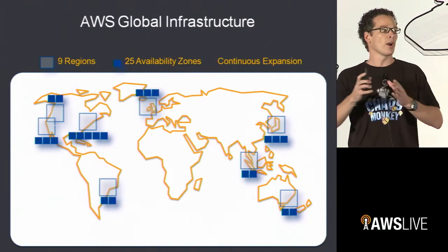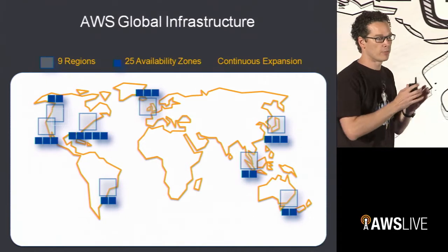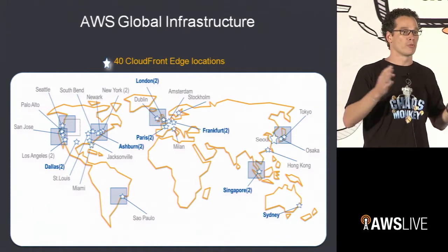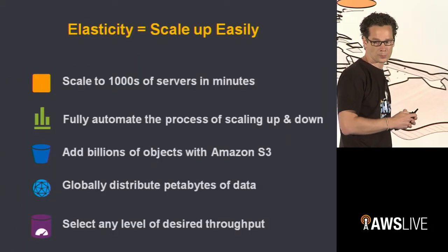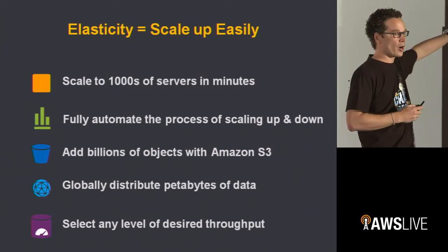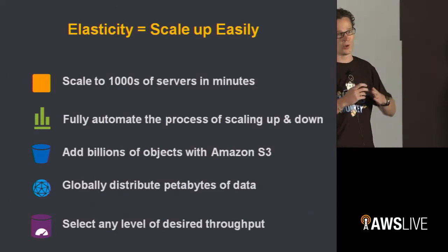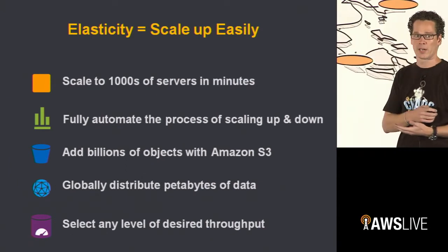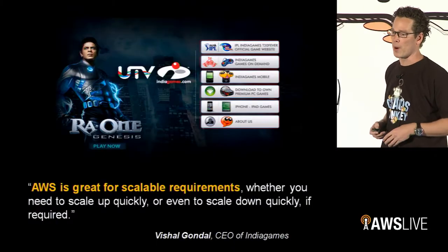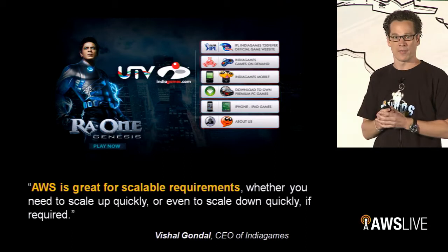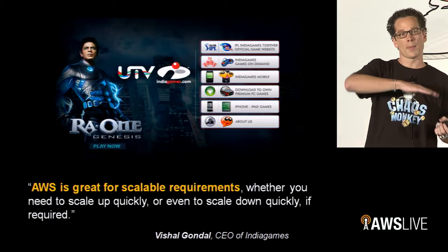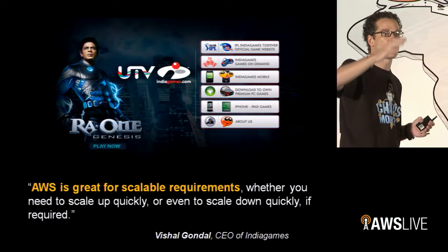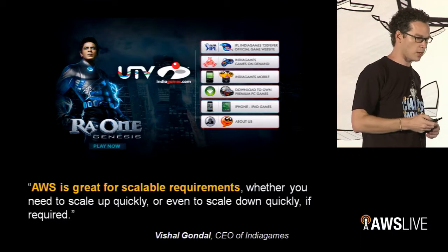We have regions globally, availability zones, and a lot of edge locations that allow you to reach the world in minutes. The elasticity extends beyond just compute — there are super scalable databases, super scalable storage, and a content distribution network that allows you to manage petabytes of data easily. India Games has really benefited from this. With games, you launch, everyone comes, and then traffic tapers off — even on a single day, traffic spikes up and down, so the ability to deal with that at scale is very important.